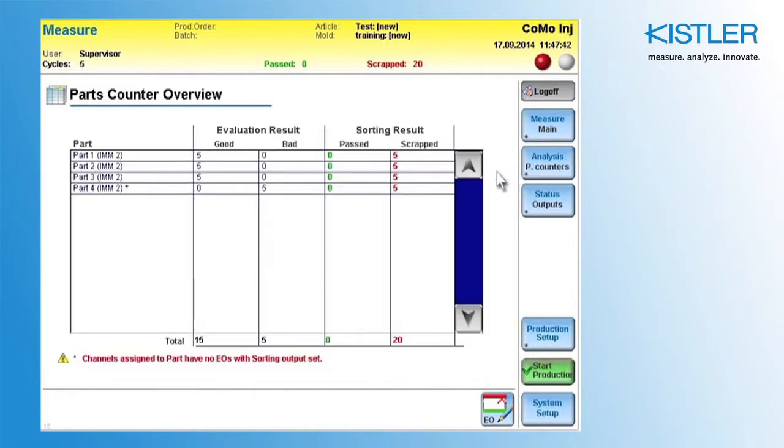You can see the evaluation results and the sorting results for the channels. As you can see, the evaluation result for the three channels with evaluation objects is OK. Only channel 4, which has no evaluation object, is evaluated as a bad part.